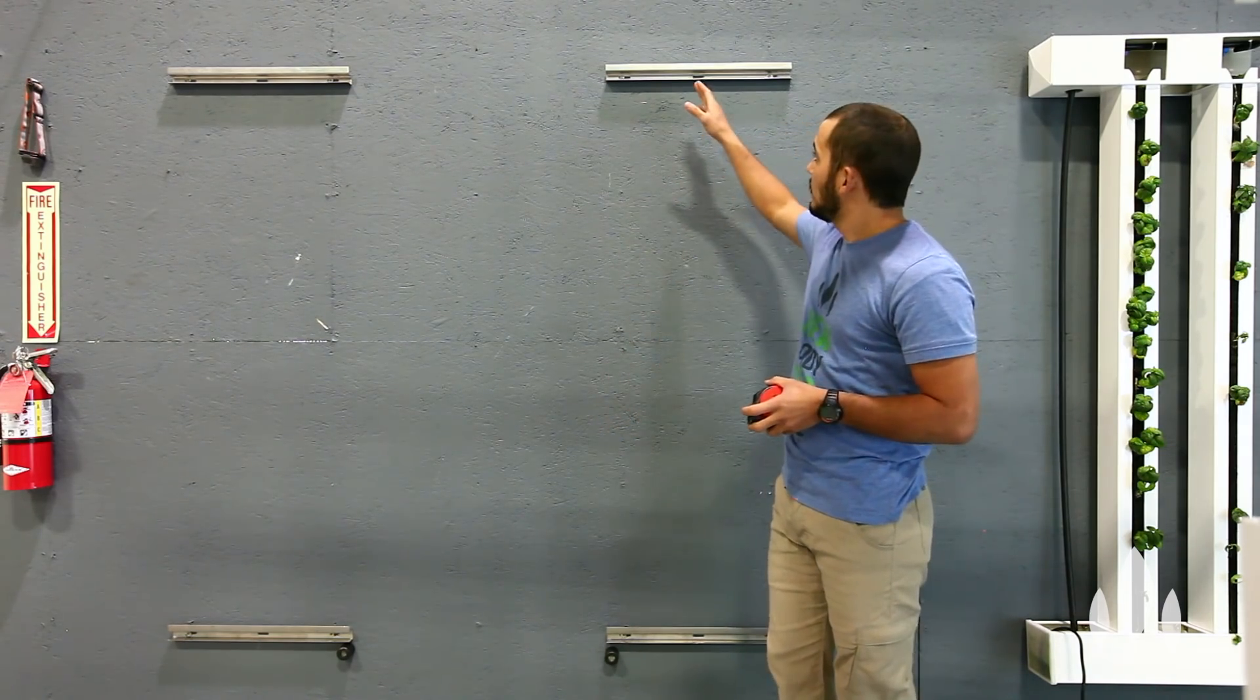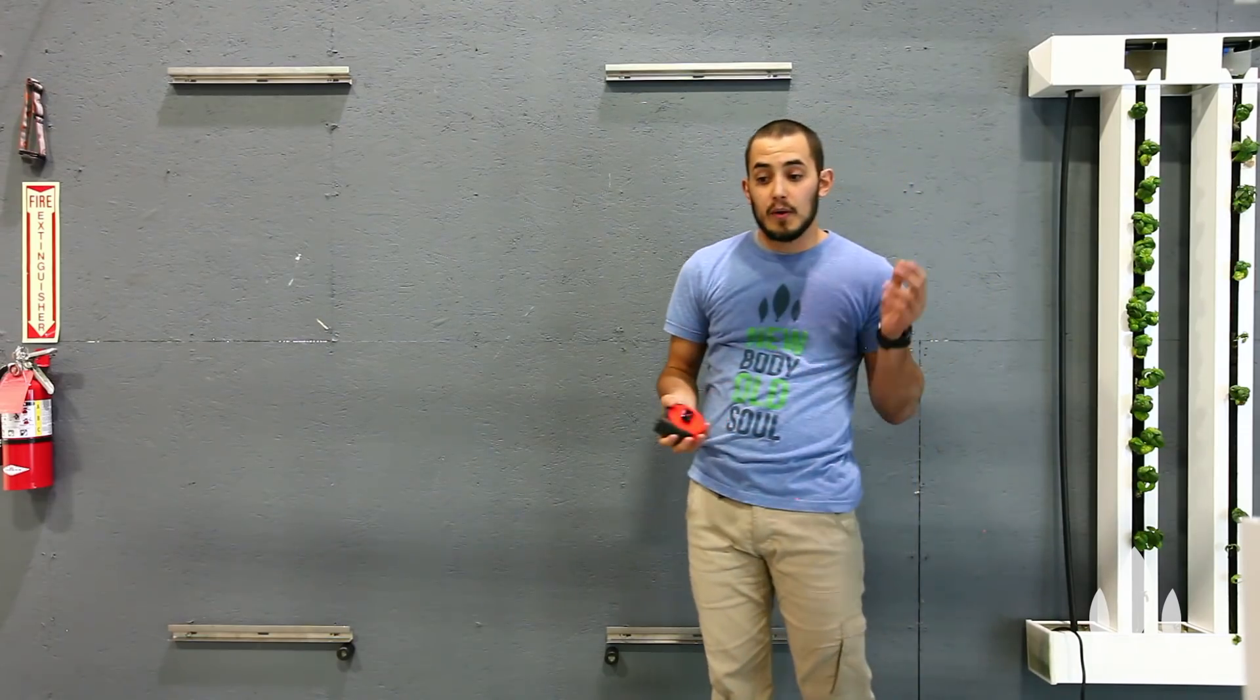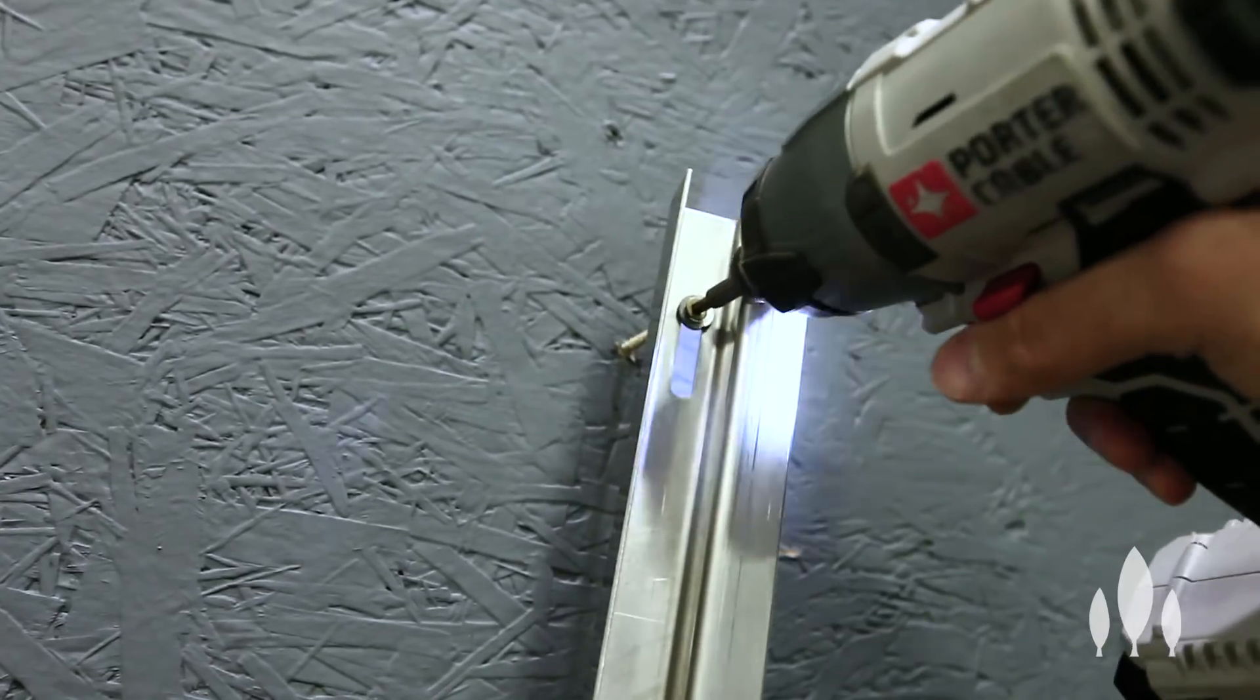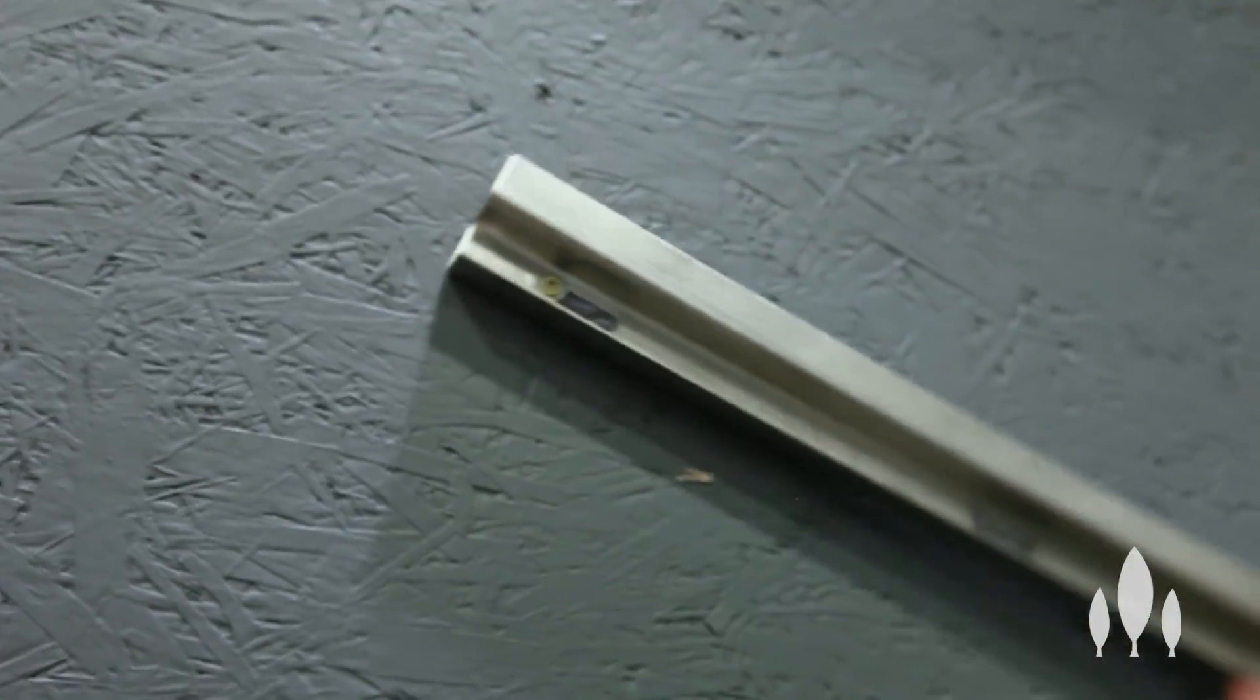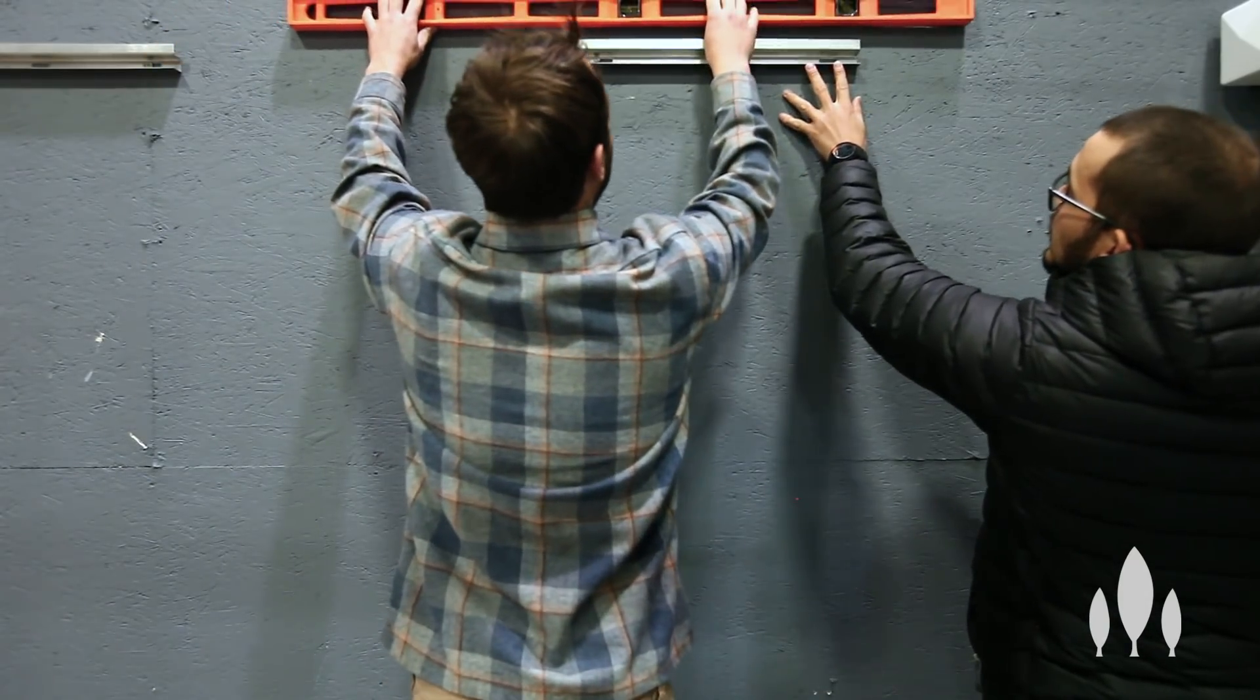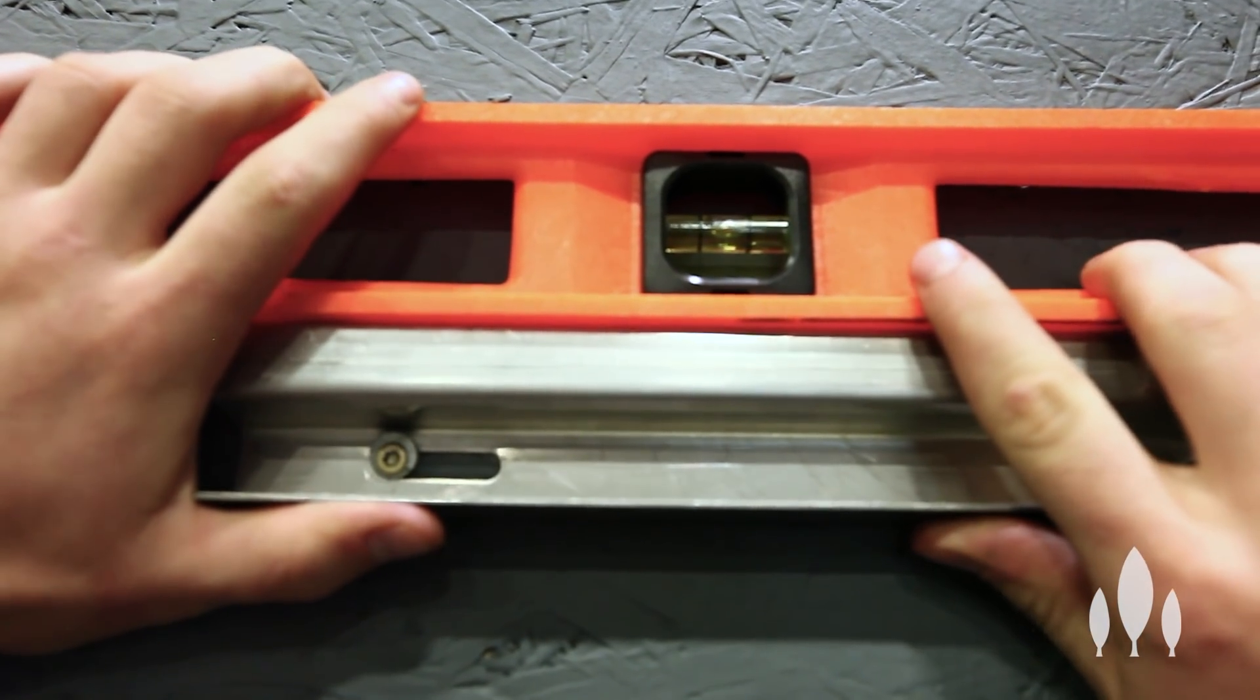What I do is I mount one channel. And what I like to do is put one screw in. Don't tighten it down all the way. And then I level that channel out. And I usually have a friend help me to hold that channel level while I put the second screw in. And then I secure them to the wall.